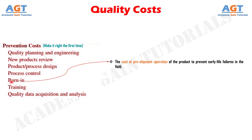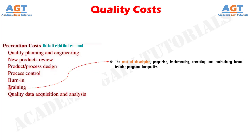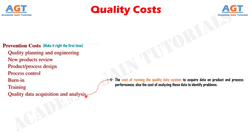Number 5, burn-in — the cost of pre-shipment operation of the product to prevent early life failures in the field. Number 6, training — the cost of developing, preparing, implementing, operating, and maintaining formal training programs for quality. And number 7, quality data acquisition and analysis — the cost of running the quality data system to acquire data on product and process performance, the cost of analyzing these data to identify problems, including the work of summarizing and publishing quality information for management.